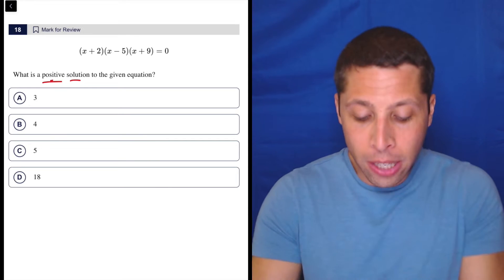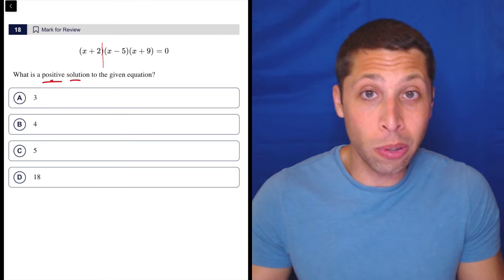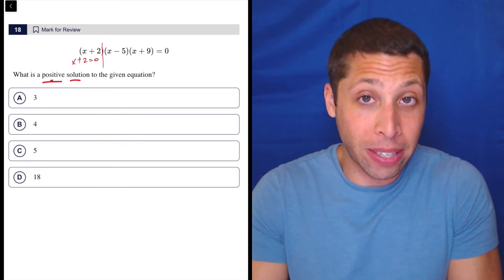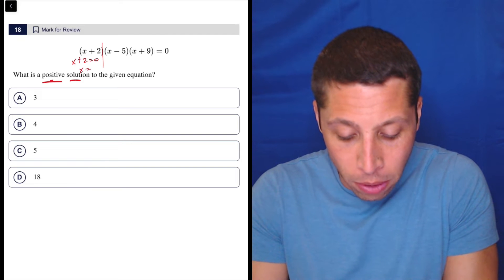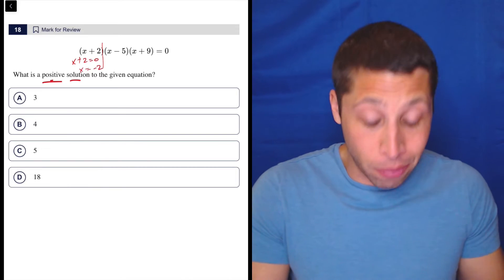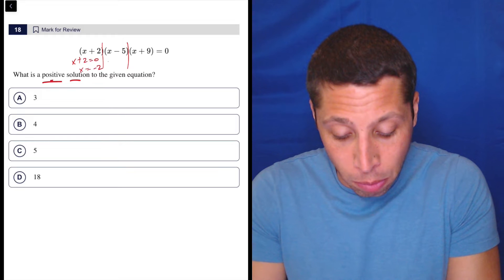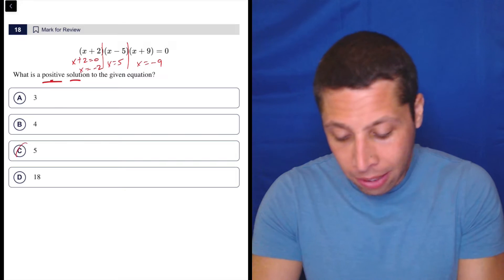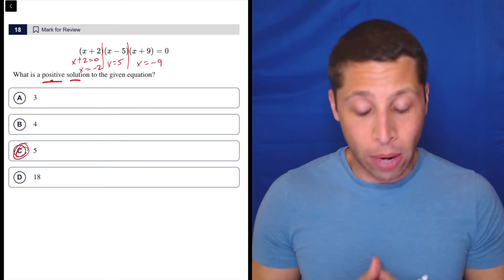Okay, if there's a mini equation where x plus 2 is equal to zero, then what would be the value of x that would make that work? Well, that's negative 2. And then we do the same thing for the others. We should be able to do this really fast. This would be x equals 5. This would be x equals negative 9. So which of those is positive? 5. Done.